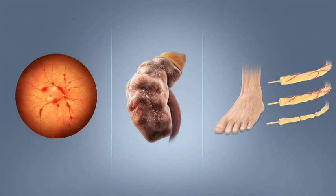Gestational diabetes mellitus resembles type 2 diabetes in several respects, involving a combination of relatively inadequate insulin secretion and responsiveness. It occurs in about 2-10% of all pregnancies and may improve or disappear after delivery. However, after pregnancy approximately 5-10% of women with GDM are found to have DM, most commonly type 2. GDM is fully treatable, but requires careful medical supervision throughout the pregnancy. Management may include dietary changes, blood glucose monitoring, and in some cases insulin may be required, though it may be transient.